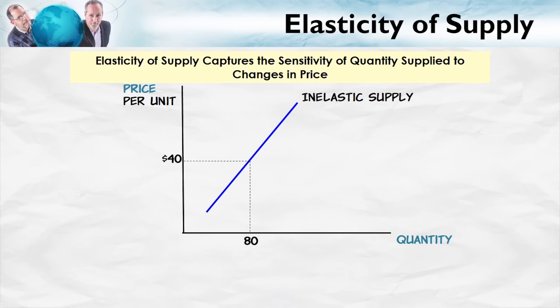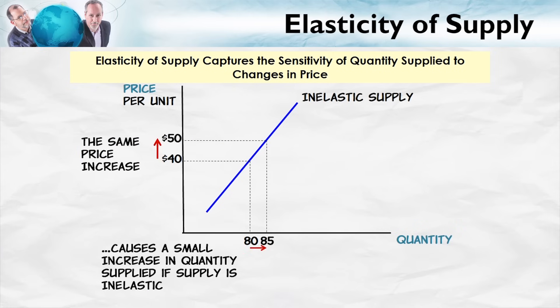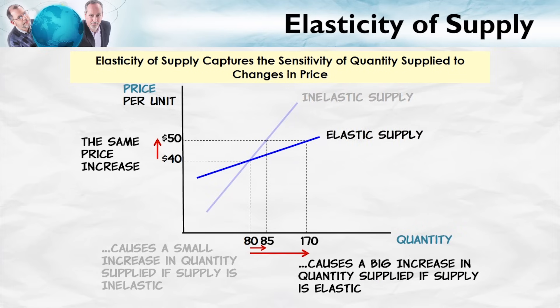Here we show this on a graph. Consider the first curve: a $10 increase in price increases the quantity supplied from 80 to 85 units — not by very much. On the other hand, on this more elastic supply curve, the same $10 increase in price increases the quantity supplied from 80 units to 170 units. You get a much bigger change in the quantity supplied from the same price increase when the supply curve is elastic compared to when it is inelastic.